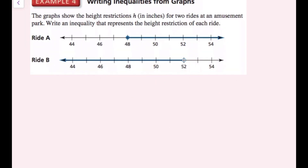For example 4, the graph shows the height restrictions h in inches for two rides at an amusement park. Write an inequality representing the height restriction of each ride. For ride A, I see a closed circle pointing to the right. Since the circle is filled in, it includes 'or equal to,' and since it goes to the right, we want all values 48 and above. So ride A is h is greater than or equal to 48.